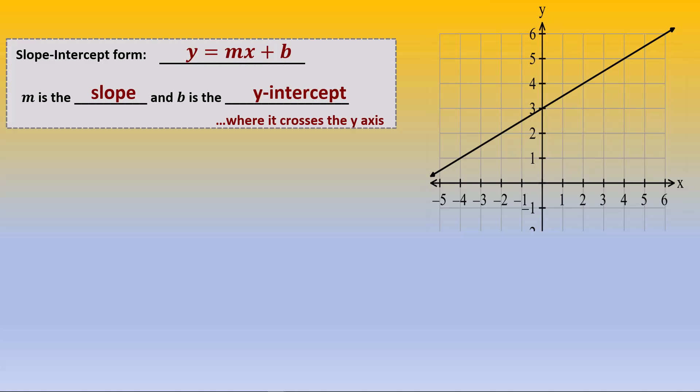In the graph shown here, the first task is to find the point where the line crosses the y-axis. This line crosses at 3, and so the value of b is 3. Now we locate a point along the line where it is easy to identify. We'll use the point (2, 4), since the line passes through that point.